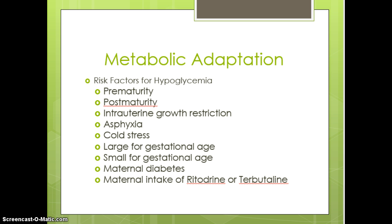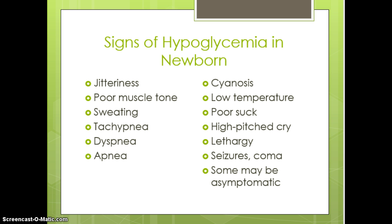Several risk factors for hypoglycemia are listed on this slide, so we need to think about doing blood glucose checks on our newborns. Refer to hospital policies, as not all hospitals are the same. There is a statewide initiative from the Perinatal Association of Iowa that suggests checking a blood glucose on every infant, but some hospitals only check if they fall into one of the risk categories. What we would like to see is a blood glucose of at least 45, preferably 50.